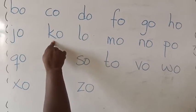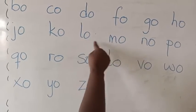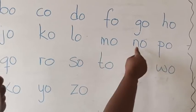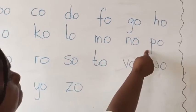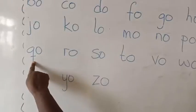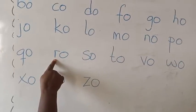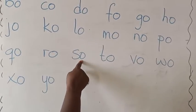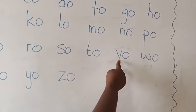Go, a, ka. U, a, la. M, a, mo. M, a, na. Po, a, pa. Ko, a, ka. R, a, ra. S, a, sa. To, a, ta.